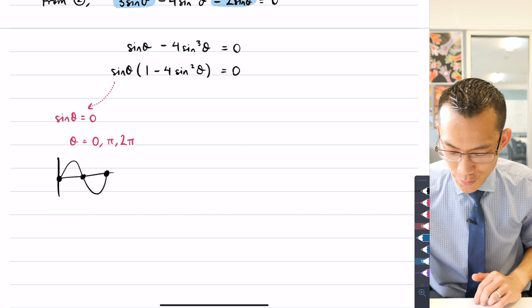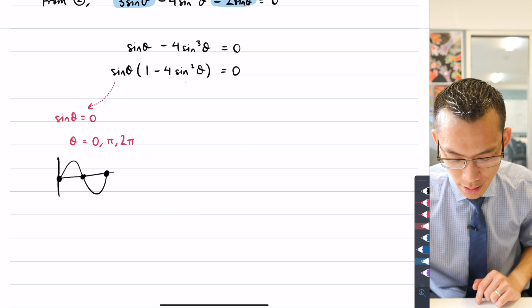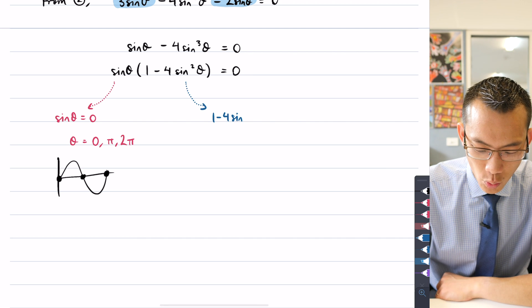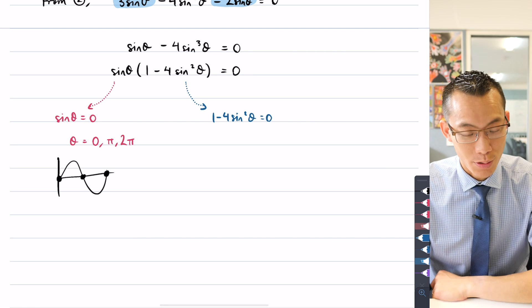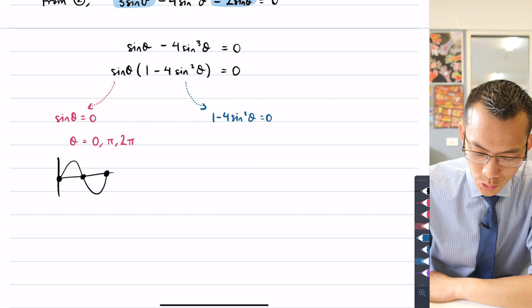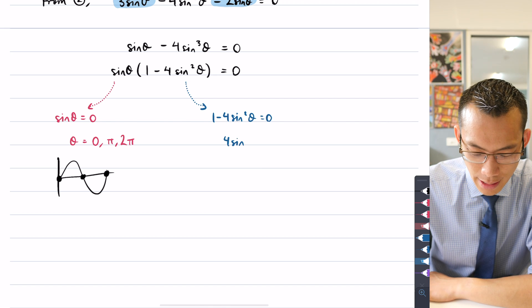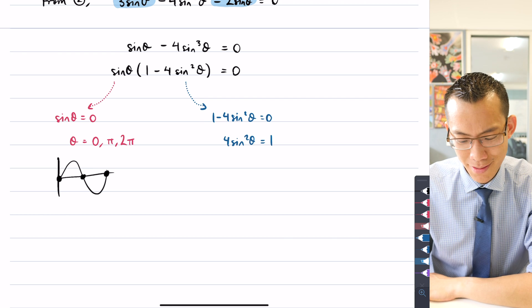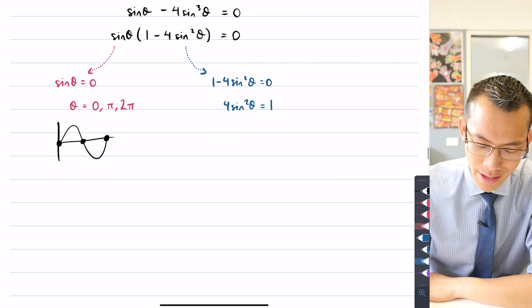Then we have a look over at this part over here. In order to make 1 minus 4 sin²θ, in order to make that equal to 0, you can see I can do a bit of simplification here. I can subtract 1 from both sides and also multiply both sides by negative 1 in one hit. Hopefully you're comfortable with doing that.